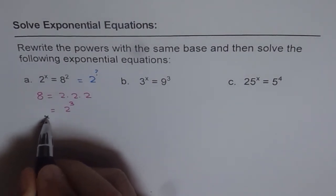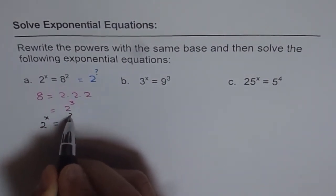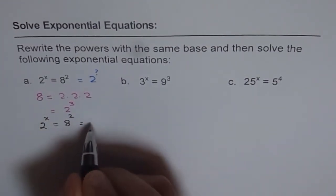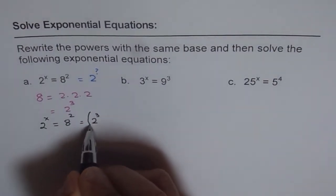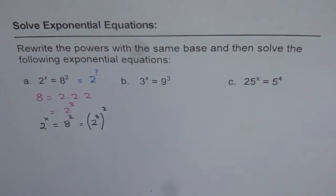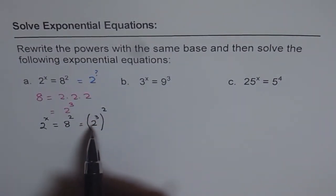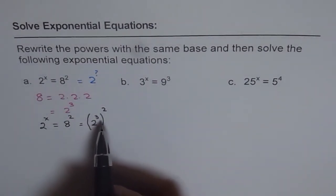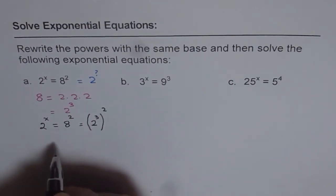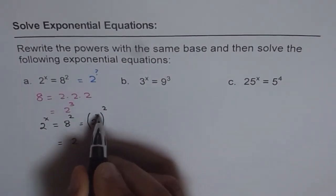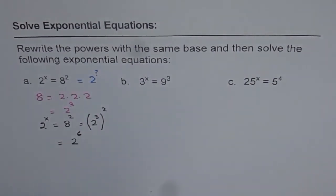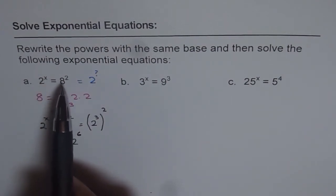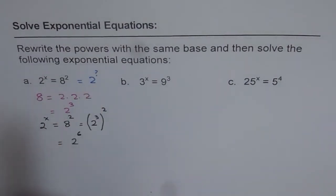We have the equation 2 to the power of x equals to 8 square. Now, 8 can be written as 2 to the power of 3, so we can write this as 2 to the power of 3, and then square. Now we apply the laws of exponentials — when we have an exponent to the power of another exponent, they get multiplied. So I can write this as 2 to the power of 6. In this way, I got the equation 2 to the power of x equals to 8 square in the form of 2 to the power of something, and that something is 6.